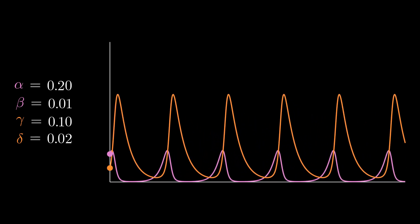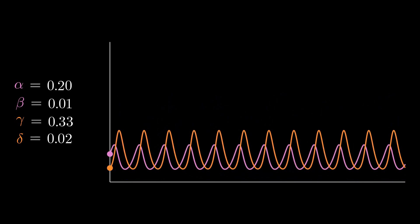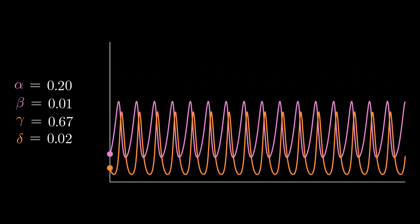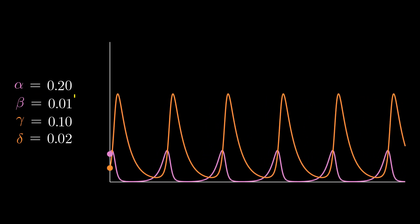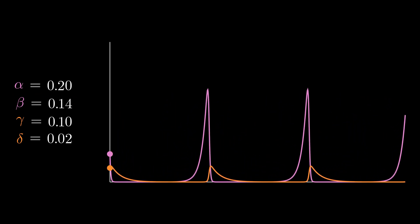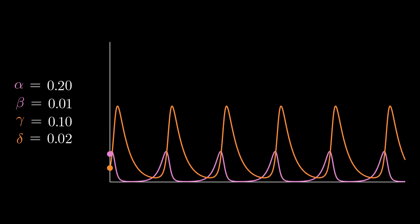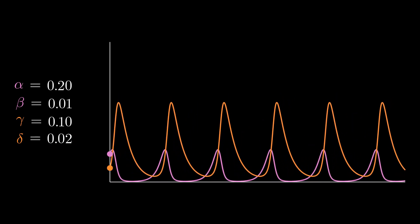This is not the case when we change the death rate gamma of the foxes. Last, the parameters beta and delta drastically affect which population has the upper hand which makes sense since they amplify the effect of the interaction of the two on the respective rates.